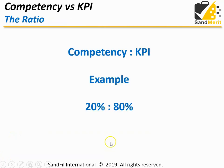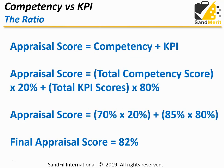The next thing you need to know is the ratio between competency and KPI. You need to give a weightage between competency and KPI — this will depend on job role, position, company culture, and your job design. Commonly, you give 20% to competency and 80% to KPI. The final appraisal score is equal to competency plus KPI, using the formula: total competency score times 20%, added to total KPI score times 80%.